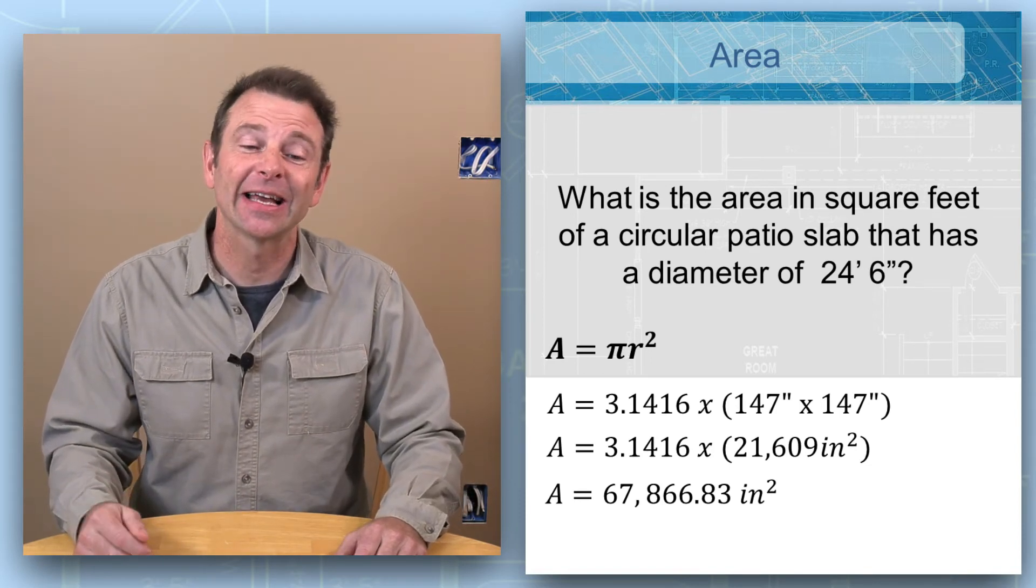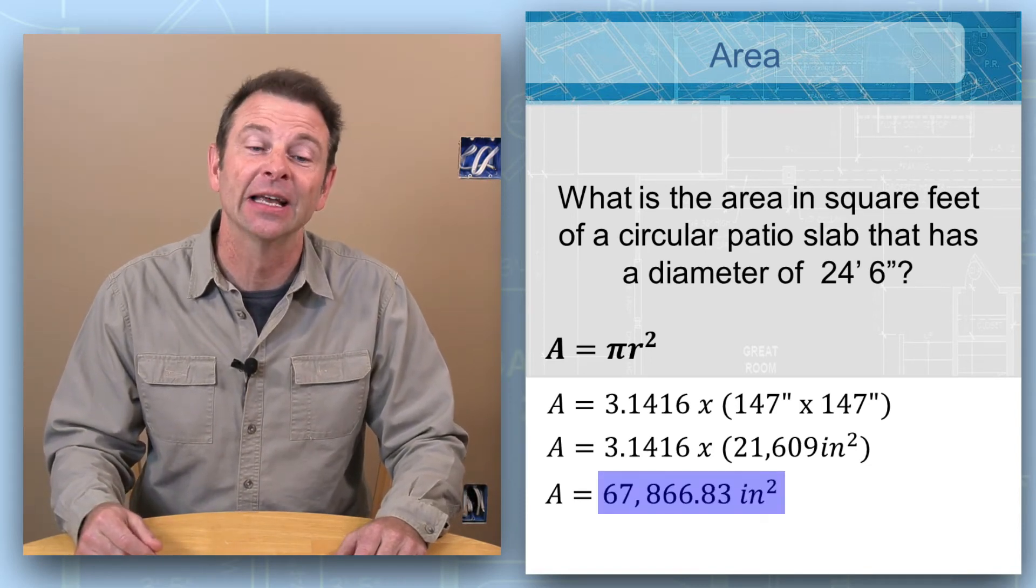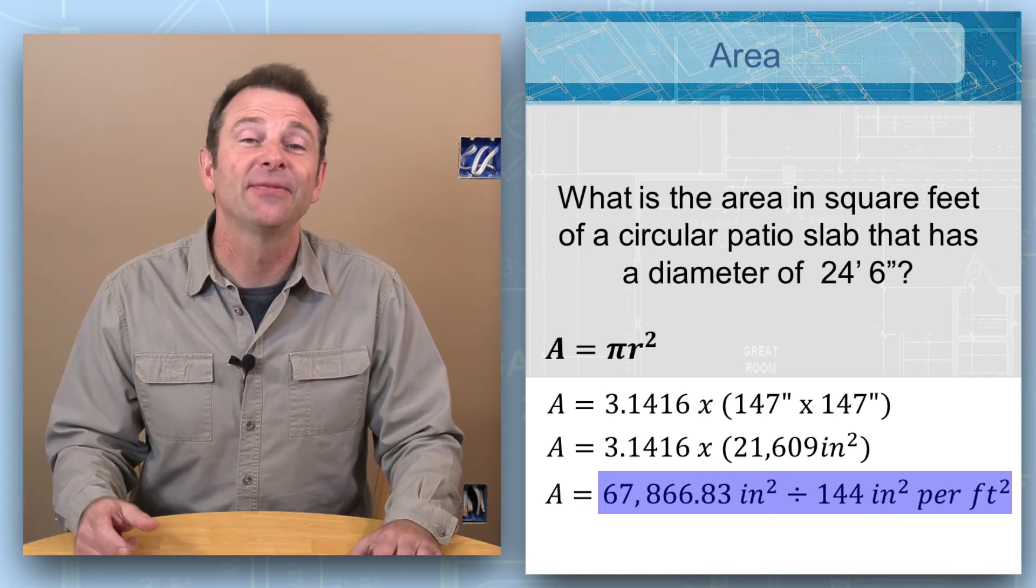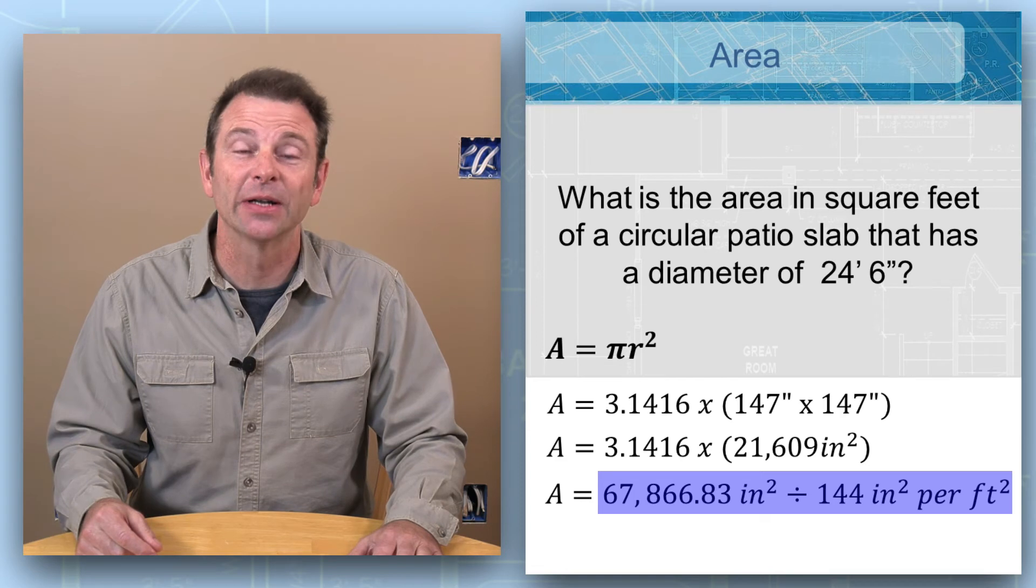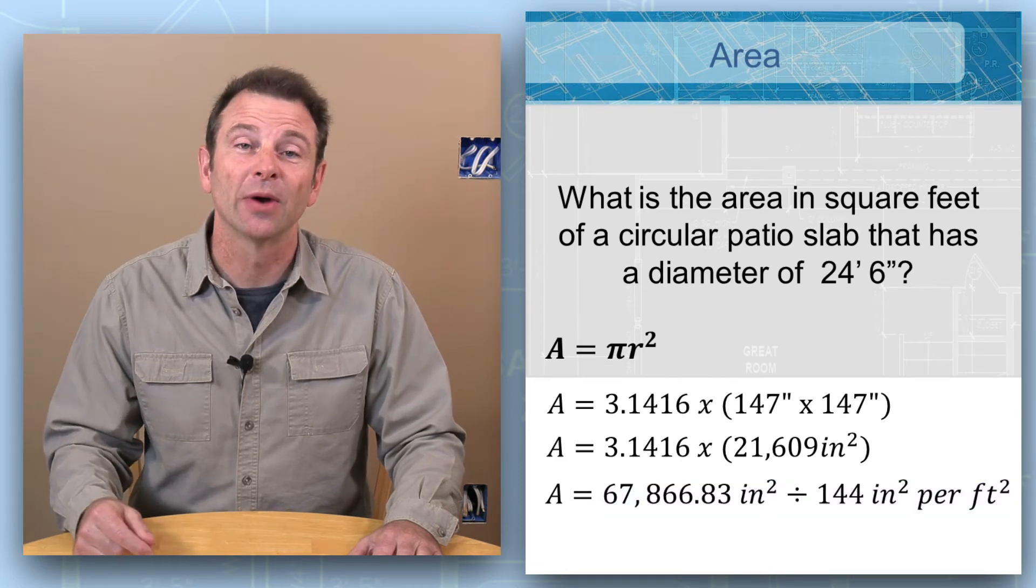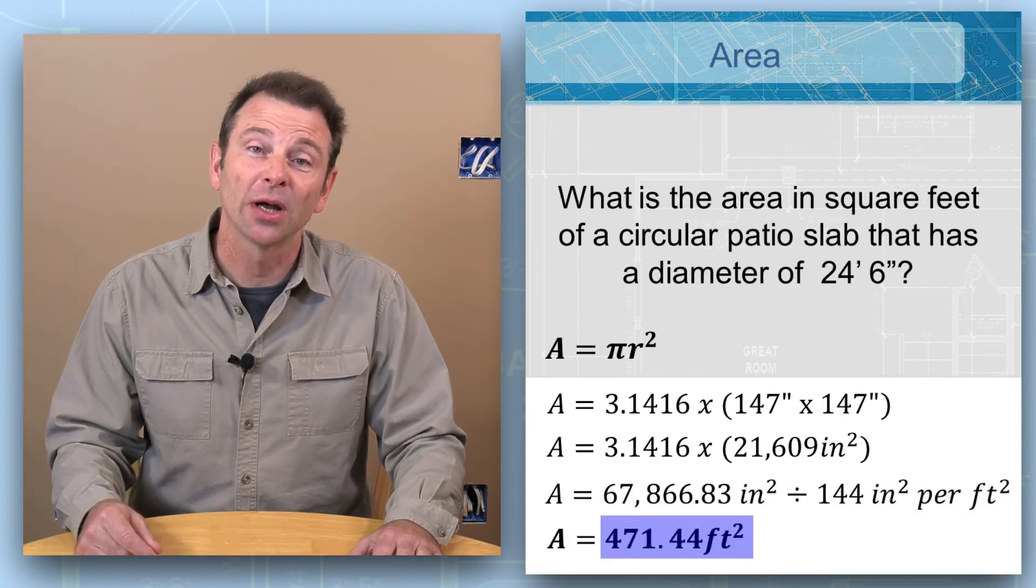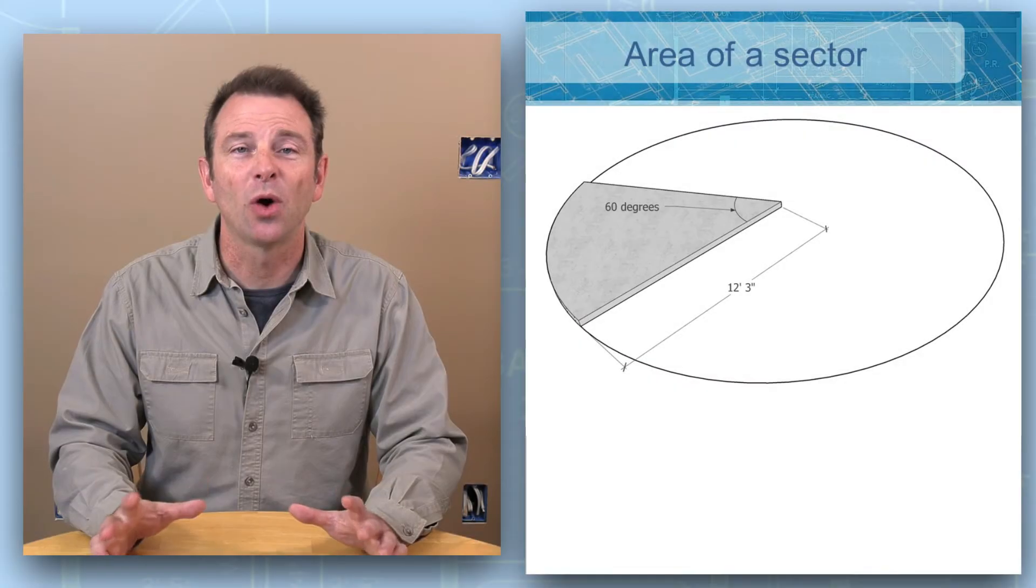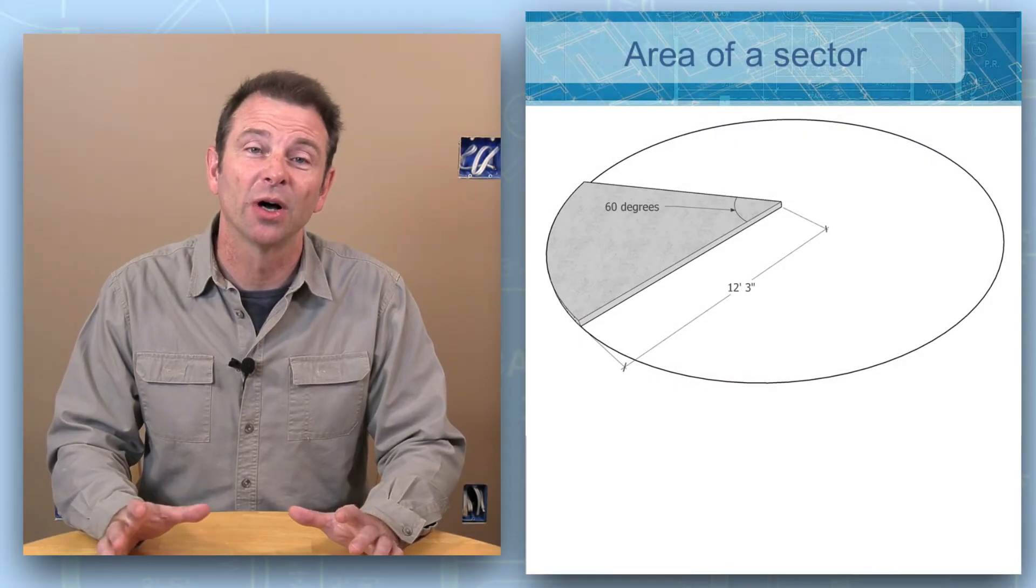So we can take that number of 67,866.83 square inches and divide it by 144 square inches per square foot to arrive at an answer of 471.44 square foot.